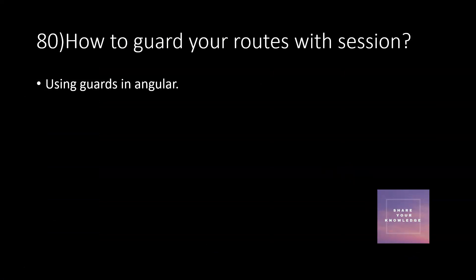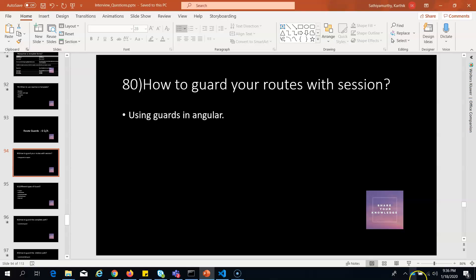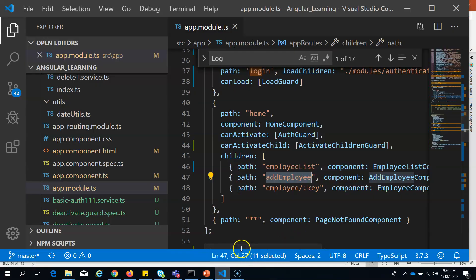The first question: how to guard your routes with a session? If you want to prevent access to routes like home or home/employee-list without a session, you need to use guards in Angular. Guards have several types, and in them you write logic to check whether the session is present. If it is, you proceed with the route; otherwise, you move back to the login page.